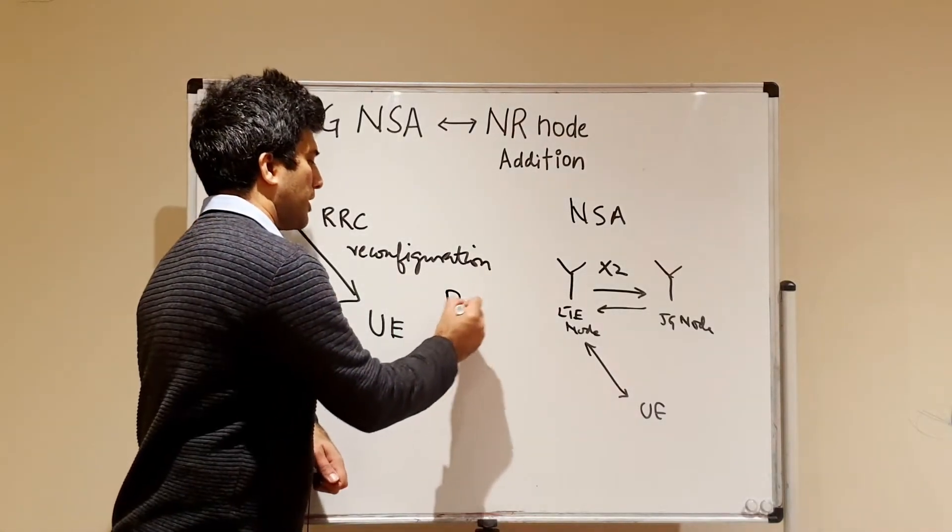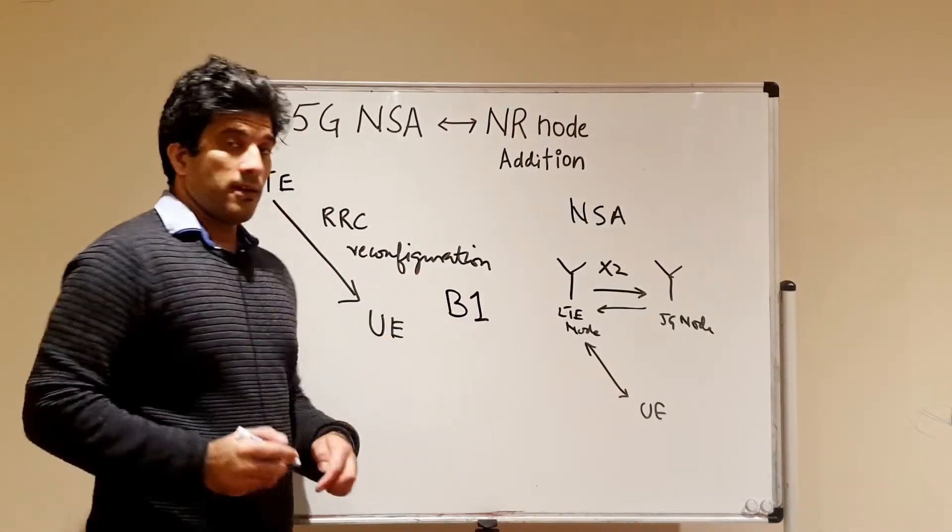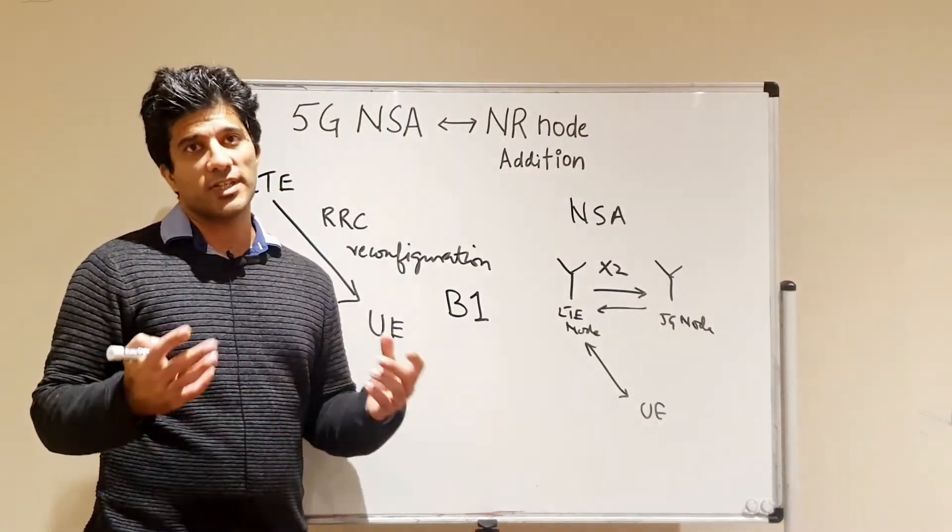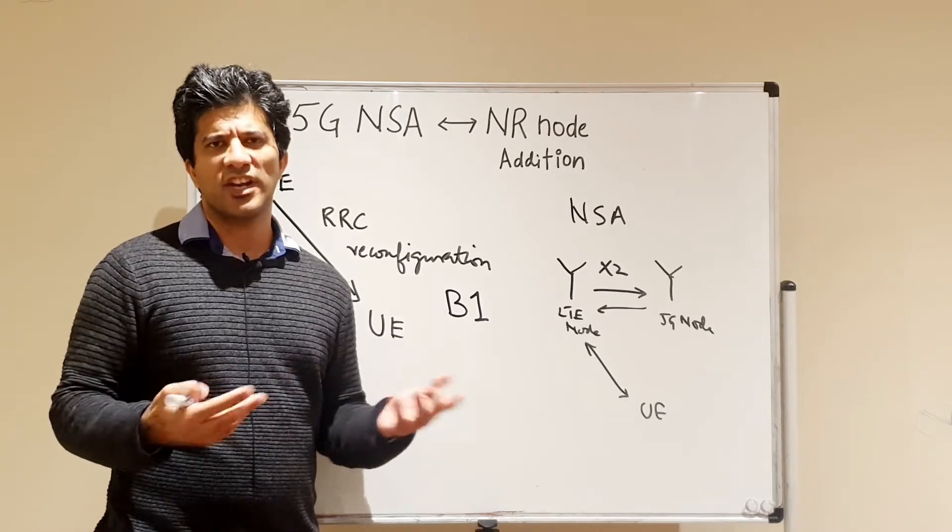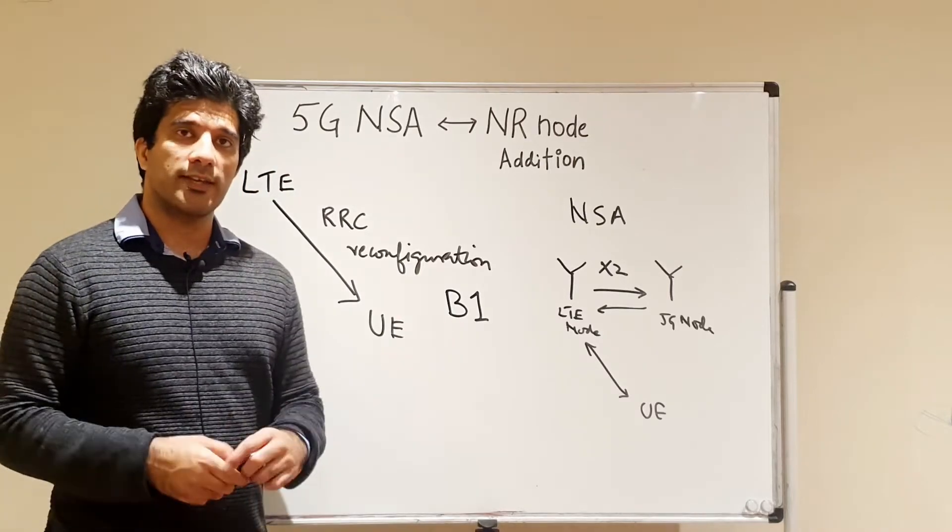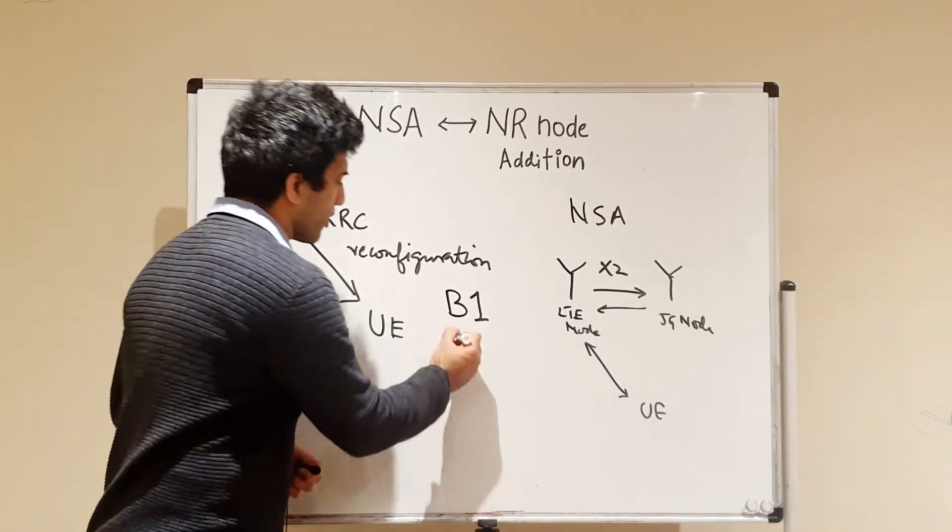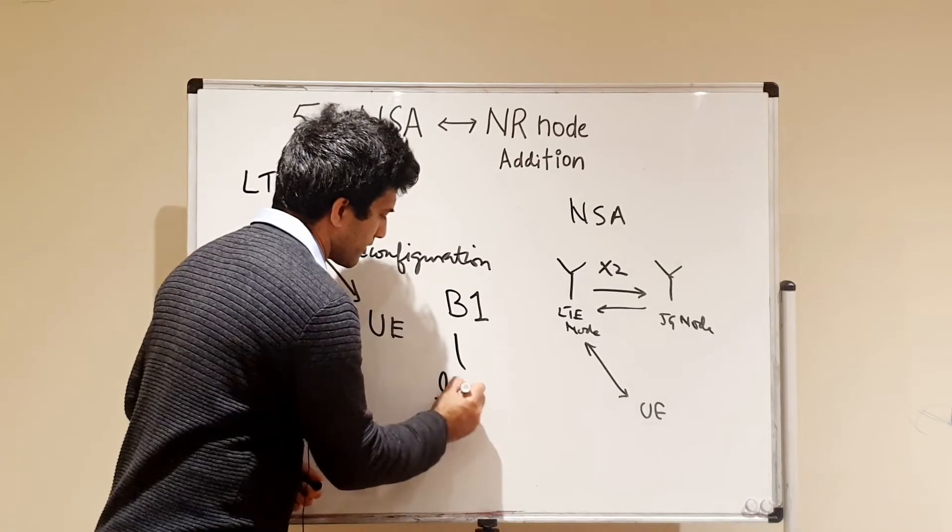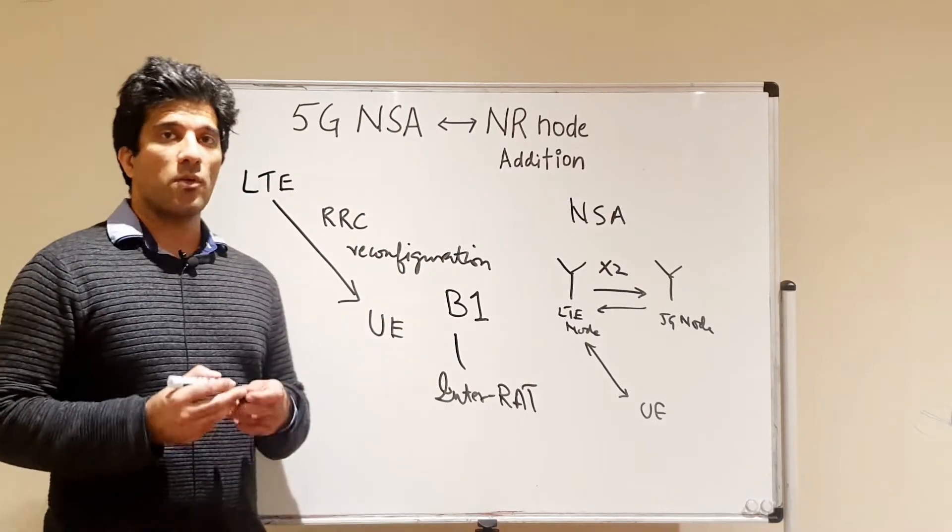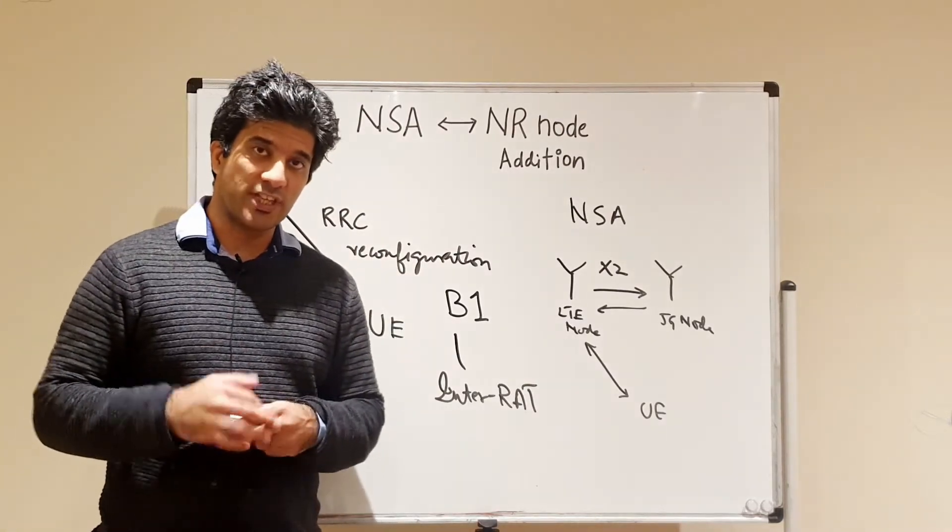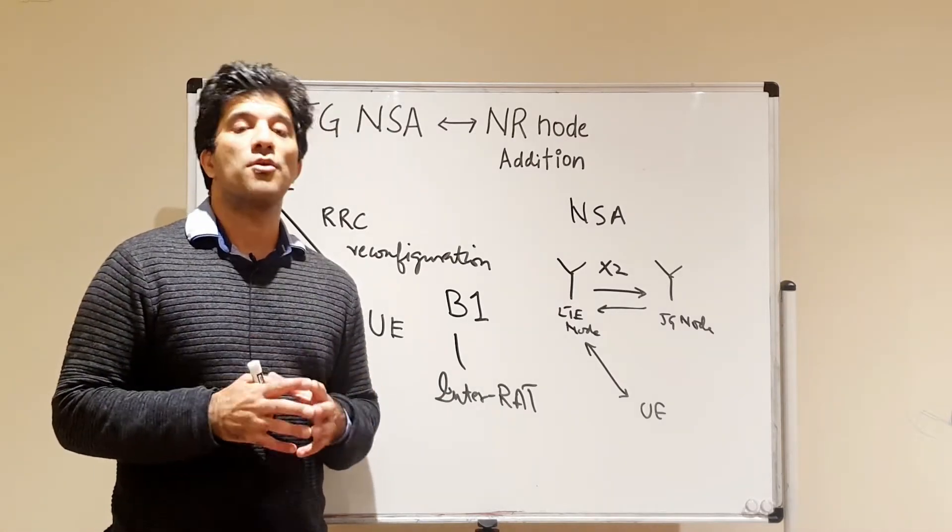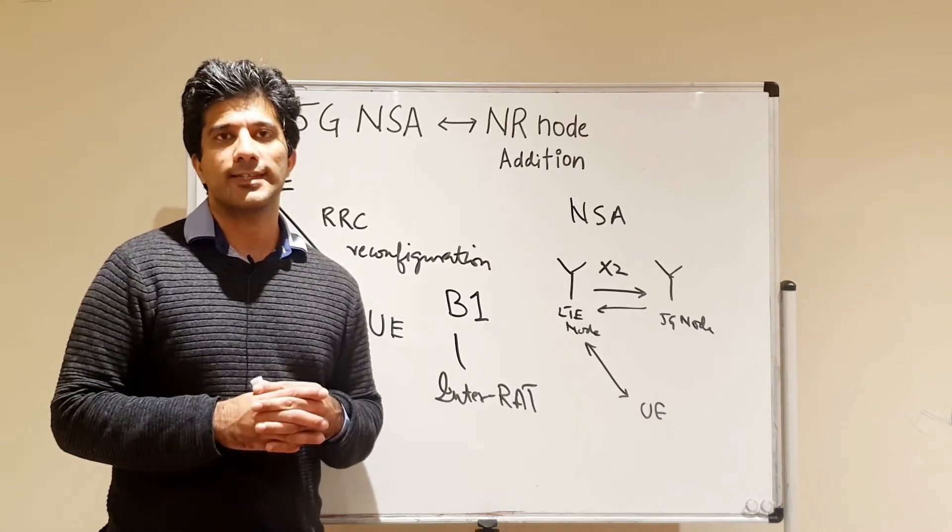It might be to add a secondary cell, it might be to start monitoring a particular cell, but this particular RRC reconfiguration message will be about the event B1. You must have heard about in LTE different events A1, A2, A3, A4, A5. B1 is also an event already being used and this is for your inter-RAT.